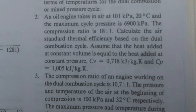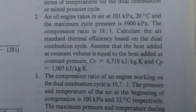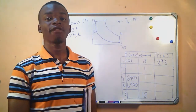An oil engine takes in air at 101 kilopascal and 20 degrees Celsius, and the maximum cycle pressure is 6900 kilopascal. The compression ratio is 18 to 1. We are to calculate the air standard thermal efficiency based on the Joule combustion cycle, assuming the heat added at constant volume equals the heat added at constant pressure. Specific heat capacity at constant volume is 0.718 kJ/kg·K and at constant pressure is 1.005 kJ/kg·K.